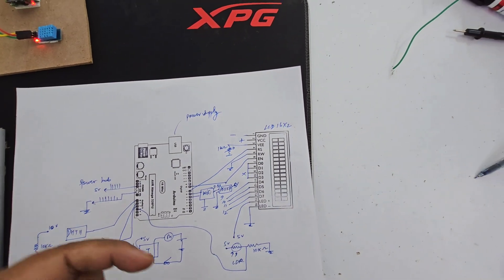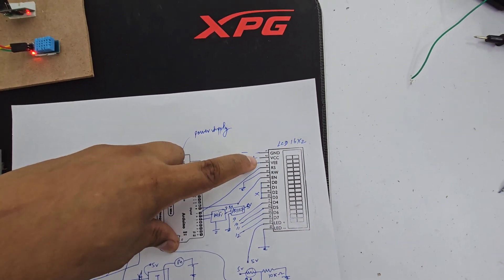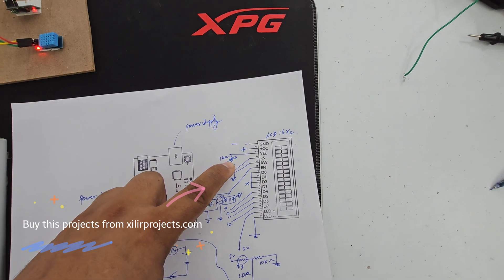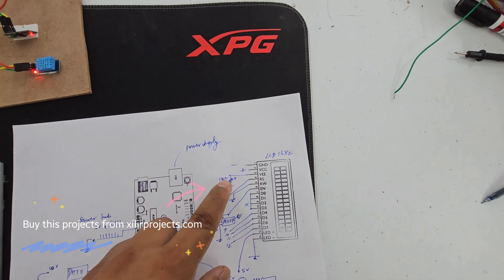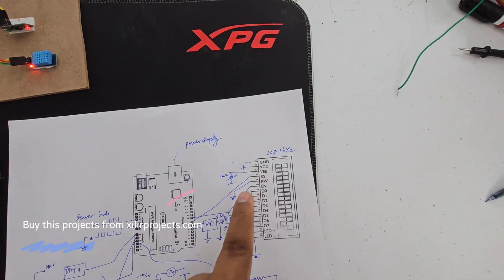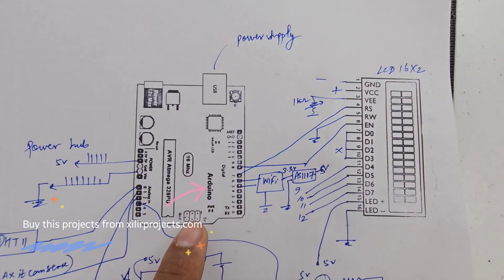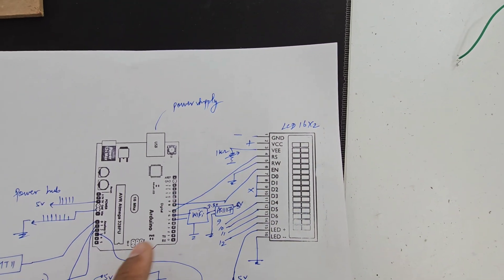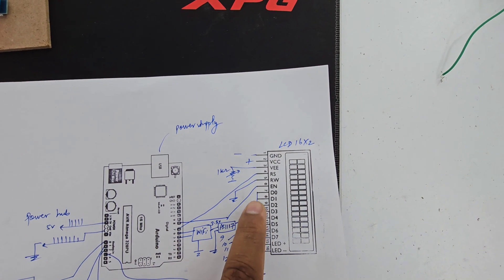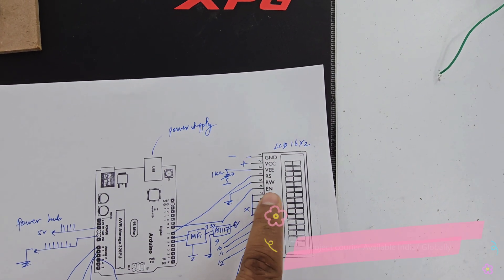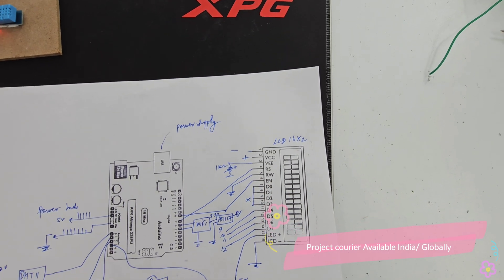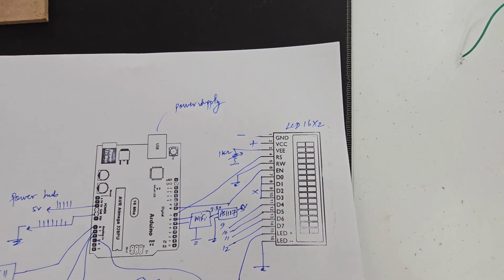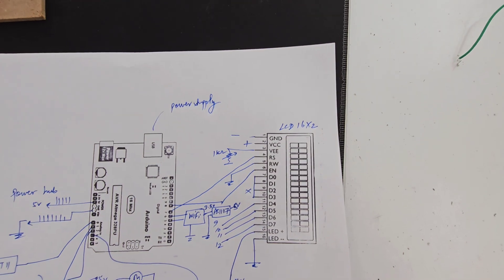We have LCD connections here: LCD ground, VCC, then contrast setting. Pin number three handles contrast. Pin number four is connected to D7 of Arduino — this is the register select pin. For RW, read/write: write means zero, read means one, so we put it to ground.